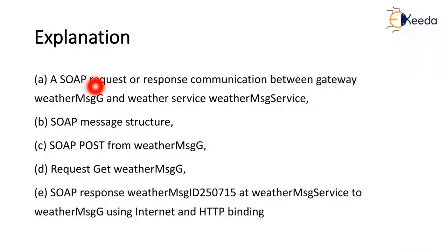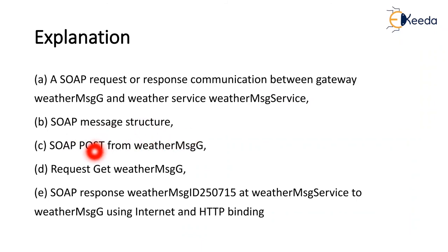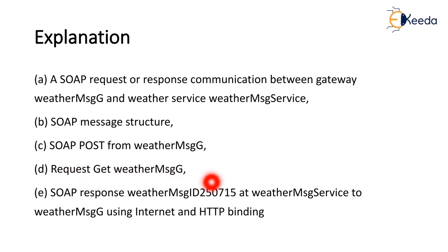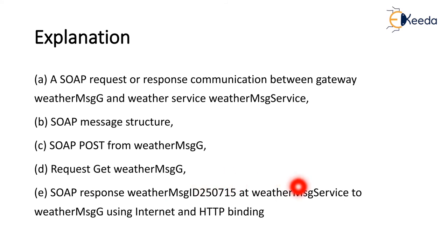The SOAP request-response communication between the gateway covers the SOAP structure, message structure, and SOAP POST from weather message and request to get weather from message G. The SOAP response ID 250715 at weather message service to weather message uses internet and HTTP binding.